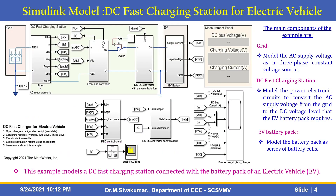This is the Simulink model of this DC charging station for electric vehicle. The main components of the example are: first, the grid, which models the AC supply voltage as a three-phase constant voltage source. The next one is the DC fast charging station subsystem, which contains three subsystems — filter and AC measurements, front-end converter, and DC-to-DC converter with galvanic isolation. This system is responsible for converting the AC supply voltage from the grid to the DC voltage level that the EV battery pack requires.